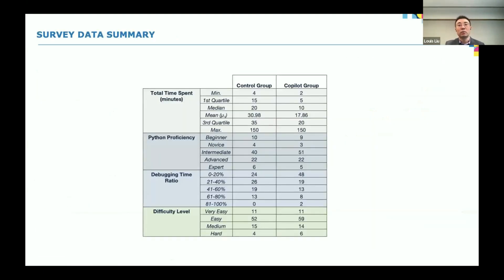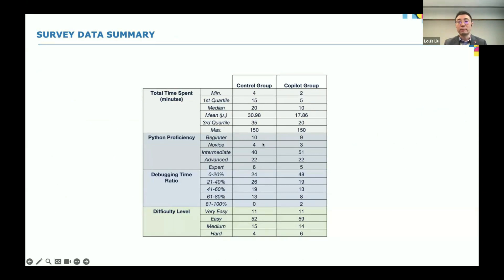Here's the survey data summary. We have a control group and a GitHub Copilot group, looking at total time spent in minutes across different use cases. You can see the minimum, quartile, median, and mean — and apart from the maximum, almost everything for the Copilot group is better. In terms of Python proficiency, from beginner to expert, we tried to assign people evenly and randomly between the control and Copilot groups, with roughly equal distribution — 10, 9, 4, 3 in one group and 22, 22, 6, 5 in the other.